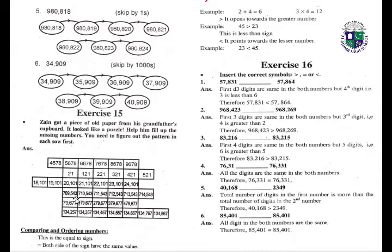70,943; 709,543; 710,543; 711,543; 712,543; 713,543; 714,543. Then: 79,677; 179,677; 279,677; 379,677; 479,677.